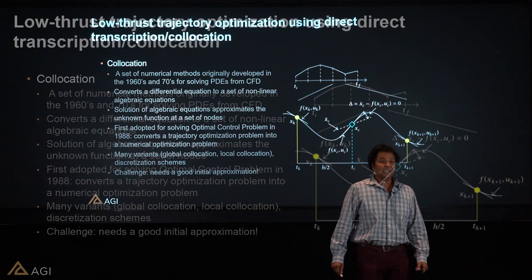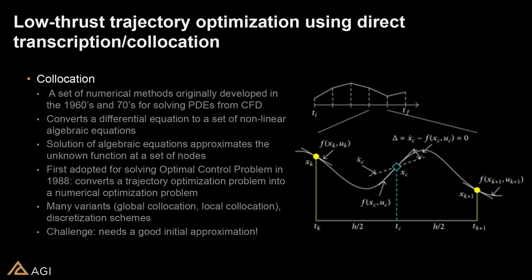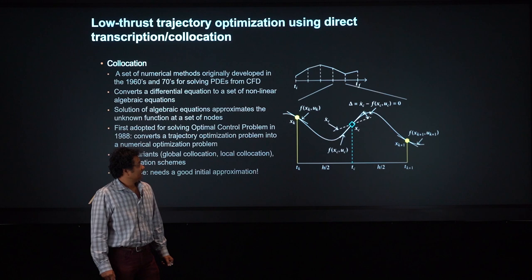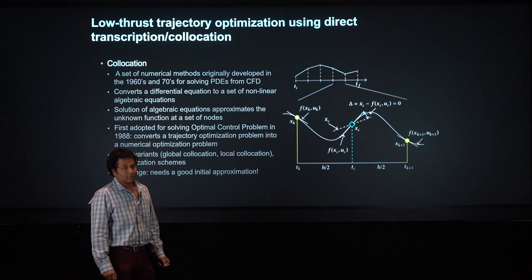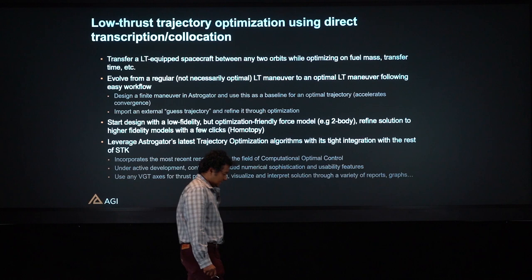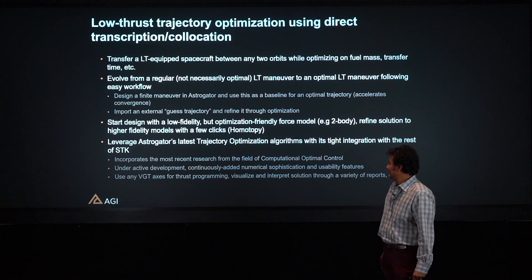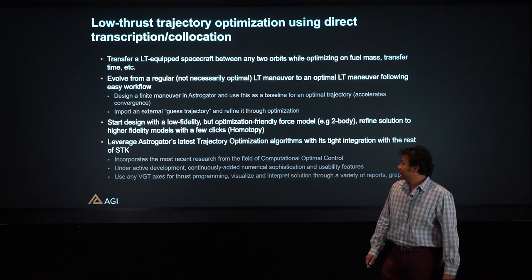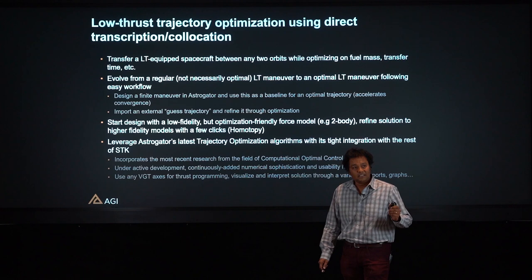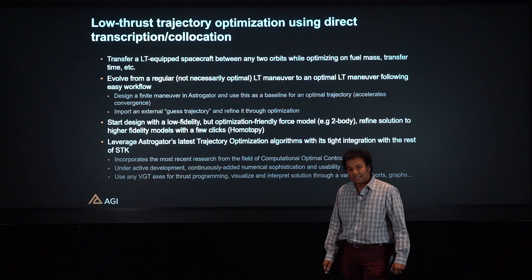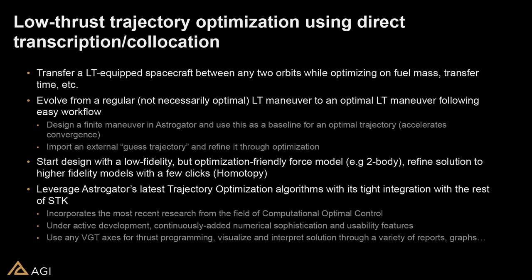Collocation methods arose in the 60s and 70s to solve fluid dynamics problems and were later adopted to solve computational optimal control problems. The basic concept is to parameterize the trajectory in terms of polynomials and solve for the optimal polynomial coefficients. We have sophisticated numerical tools in AstroGator starting with STK 11.5 that solve high-dimensional trajectory optimization problems accurately. One challenge is that we need to start with a very good initial guess — we need an idea of what the solution is before we can solve the problem. In AstroGator we have addressed this using homotopy.